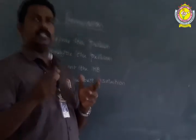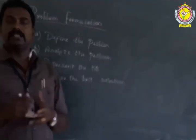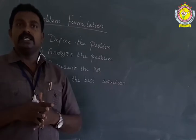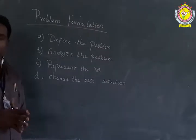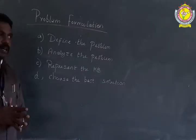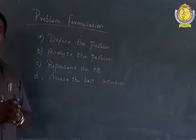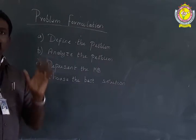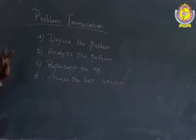By the word definition itself, you can know what is problem formulation — it simply means formulating a problem. So whatever a problem is given to a machine, the machine initially has to do four tasks to solve the problem. The problem can be to throw a ball into a basket, to sing a song, or even to dance. The steps to solve the problem initially will be these four things.